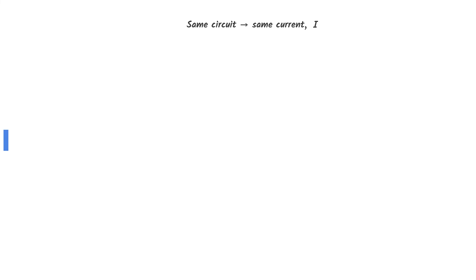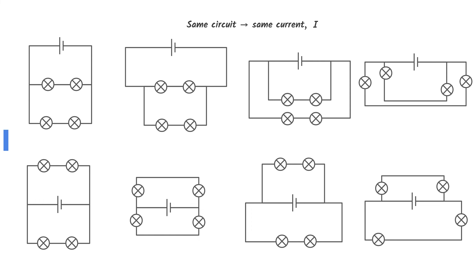The two circuits shown in the question are identical. Therefore, the current through L is also the same. Here are other ways to draw the circuit shown in the question — all these diagrams are identical.